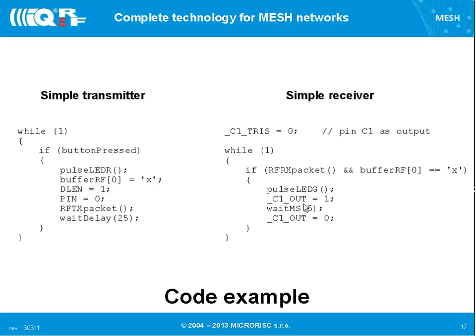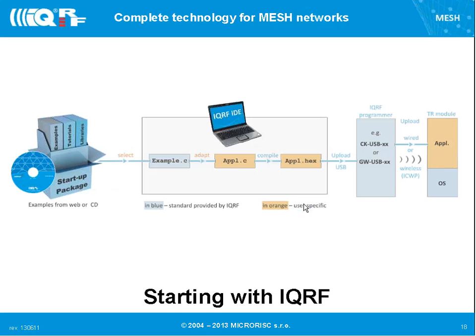That is how you write the code. We have many examples, so basically anything you want to do, the basics are available in our examples and you can combine them. To get started: get the startup package, download it from the internet or from our development set. Open the example you're interested in — temperature, networking, relays, PWM, whatever — there's already an example for it.